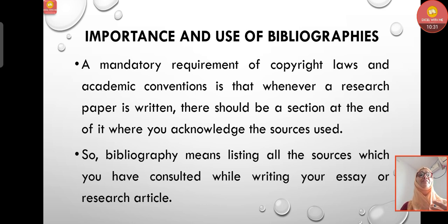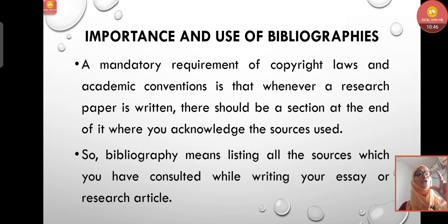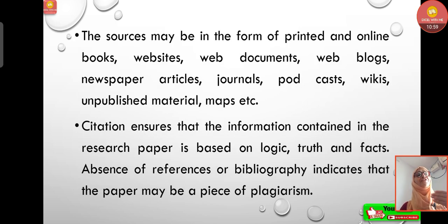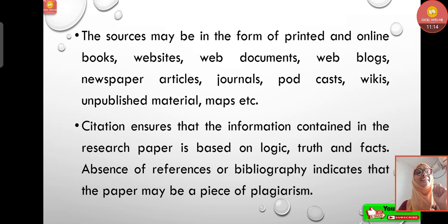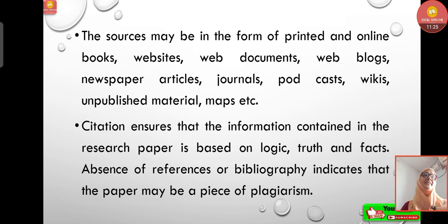The importance of bibliography: it is a mandatory requirement of copyright laws and academic conventions. Whenever a research paper is written, there should be a section at the end acknowledging all sources consulted. Sources may be in the form of printed and online books, websites, web documents, blogs, newspaper articles, journals, podcasts, Wikipedia, unpublished material, maps, etc. Citation ensures that the information in the research paper is based on logic, truth, and facts. Absence of references or bibliography indicates the paper may be plagiarism — meaning copying from somebody's work.